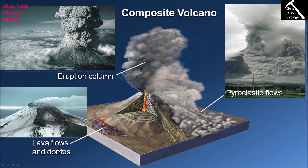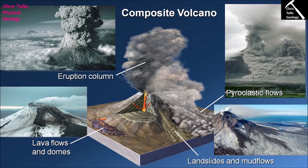As part of most composite volcanic eruptions, a smaller amount of felsic lava is also extruded. These felsic lavas are extremely viscous and can't flow far at all, so when extruded they often form volcanic domes. Another feature commonly associated with composite volcanoes is landslides. Large amounts of loosely consolidated pyroclastic material are deposited on the steep sides of the volcano, and it doesn't take much to make that material begin to flow downslope under gravity, creating a landslide.